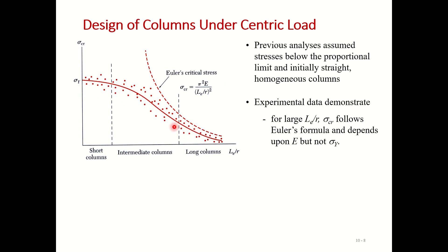Each dot on the graph represents the failure of an individual column tested in experiment, and then buckled to obtain the data. This curve tells us that for large Le/r, sigma critical follows the Euler formula and depends upon E but not upon sigma_y. In long columns the experimental curve approaches the Euler curve, and the modulus of elasticity is more important compared to other material properties.